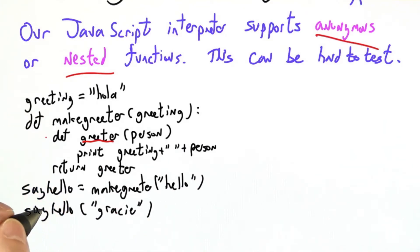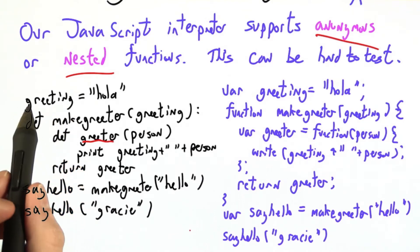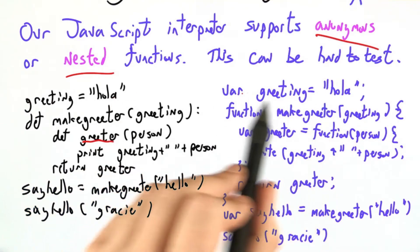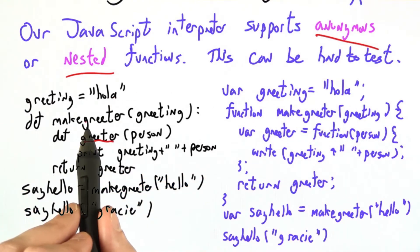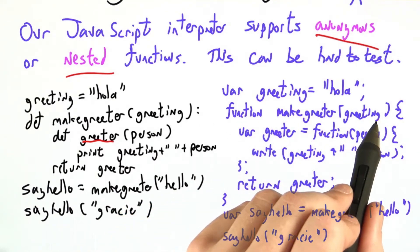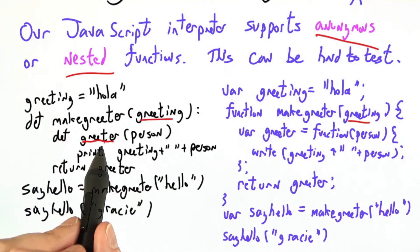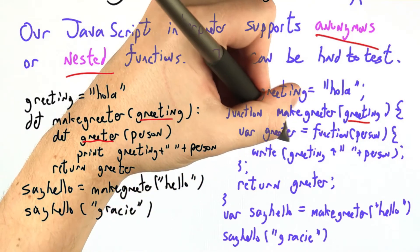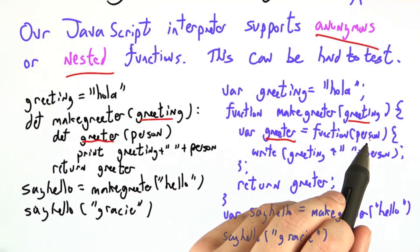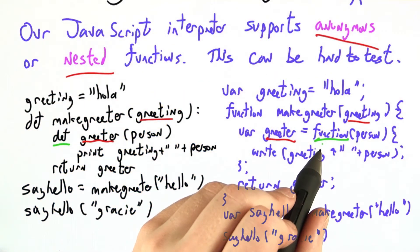I'm going to write the same program in JavaScript. Aside from some minor syntactic differences, the content is the same. We make a variable greeting initialized to hola, and we define the makeGreeter function of one argument called greeting. Then we make a nested function greeter that takes an argument person — where in Python we used another def, in JavaScript we're using the function keyword.